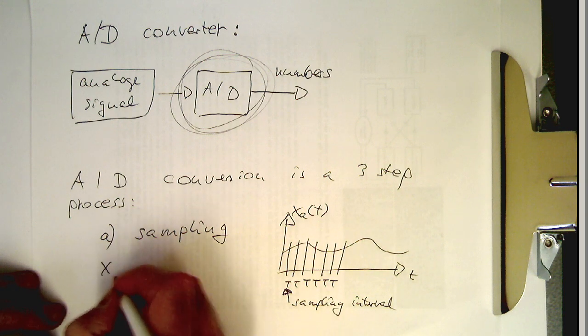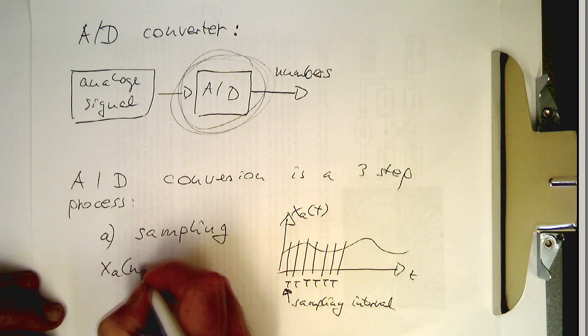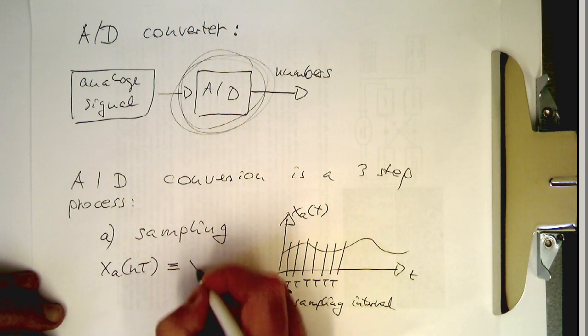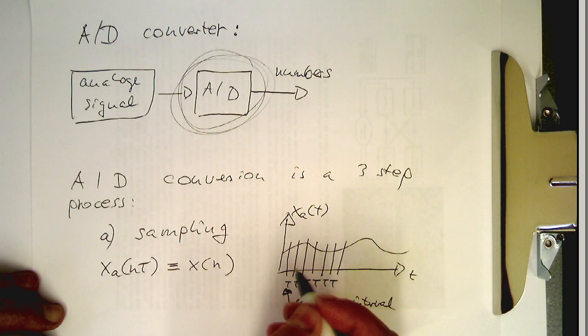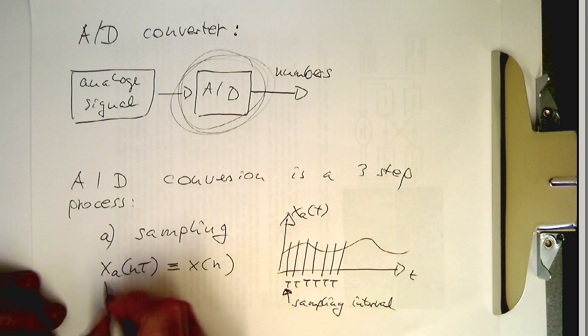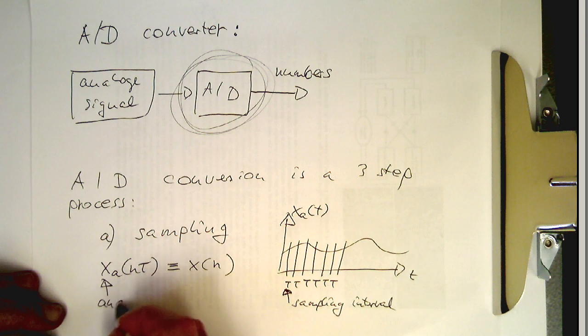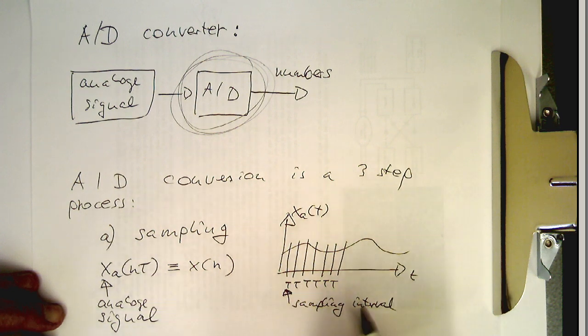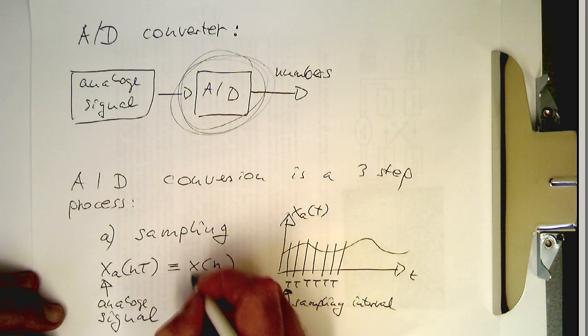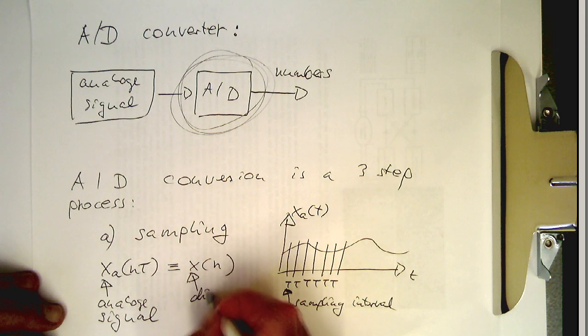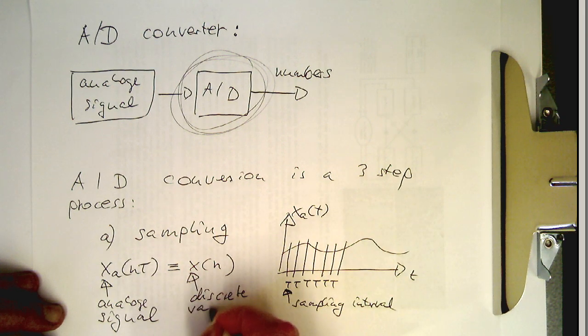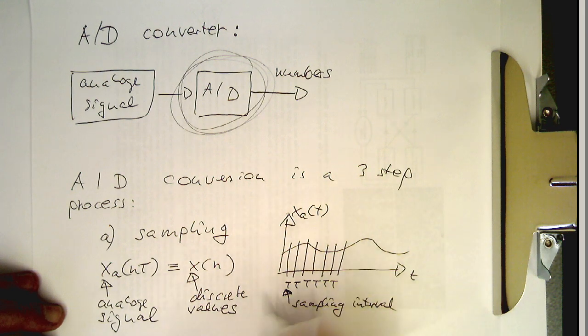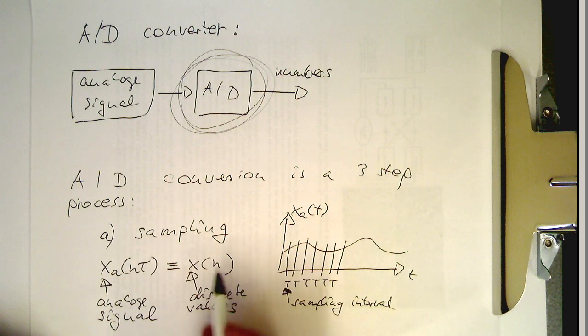So in terms of math we can write XA of T and this gives us an X of N. So this is our analog signal. These are here our discrete values. So we see X of N, that T is now missing here. So what we're getting is just a sequence of numbers out of this step here.